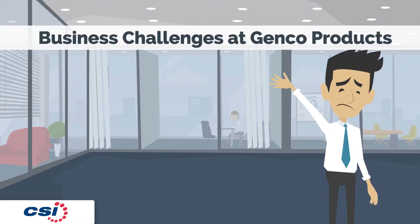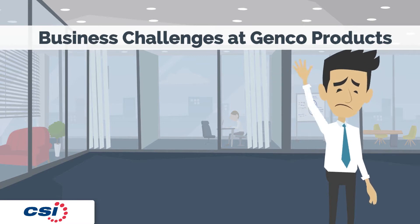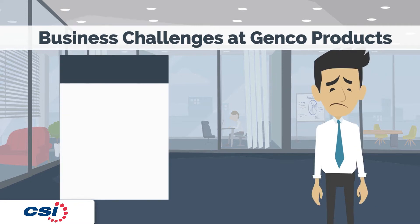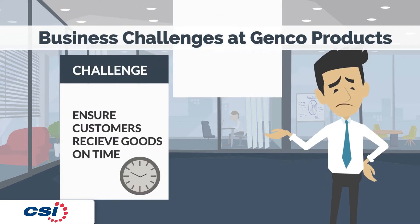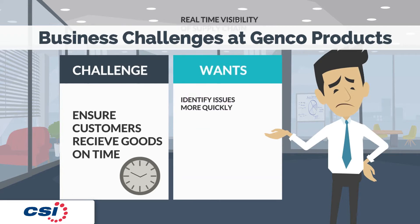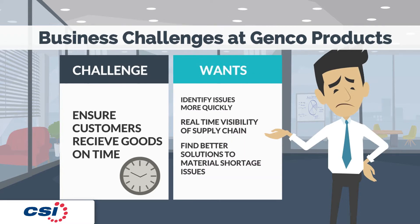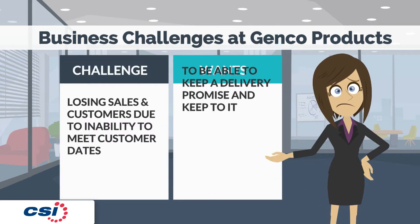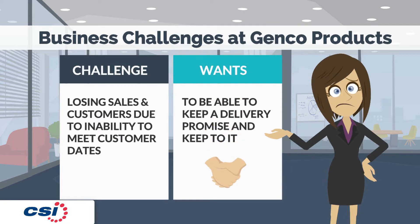Let me introduce you to Max, who is an MRP controller responsible for ensuring material availability for approximately 3,000 materials. His main challenge and responsibility is to ensure that customers receive their goods on time. He wants to identify issues more quickly in real time and find better solutions to material shortage issues. Amanda is a sales clerk who is unable to ensure that customer delivery dates will be met, resulting in a low level of customer satisfaction. She wants to be able to confirm delivery dates to customers which will be fulfilled.